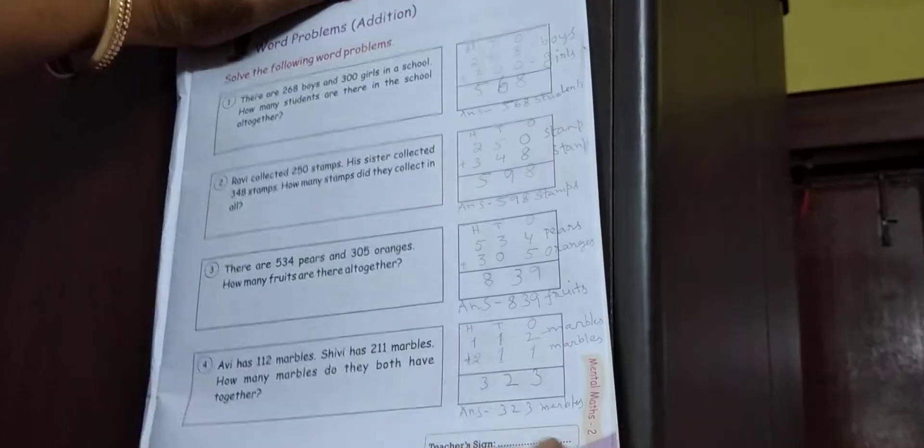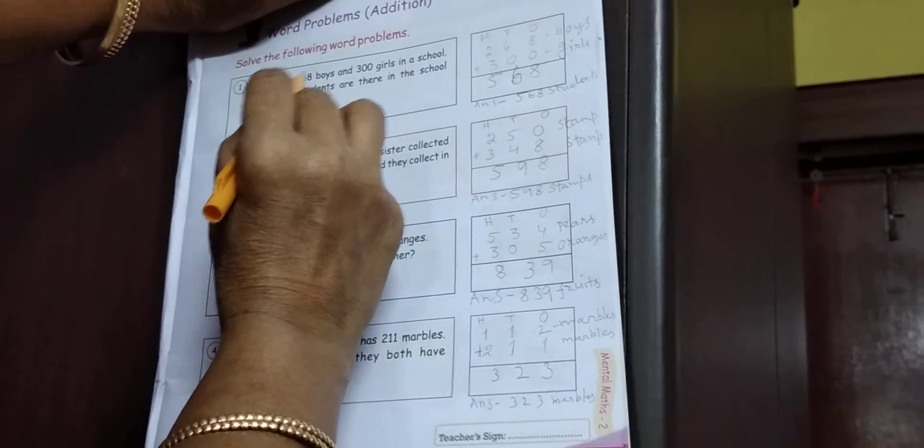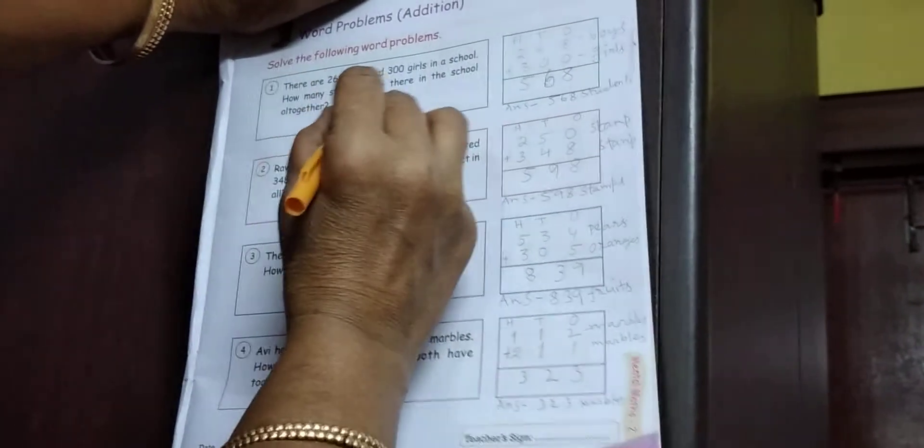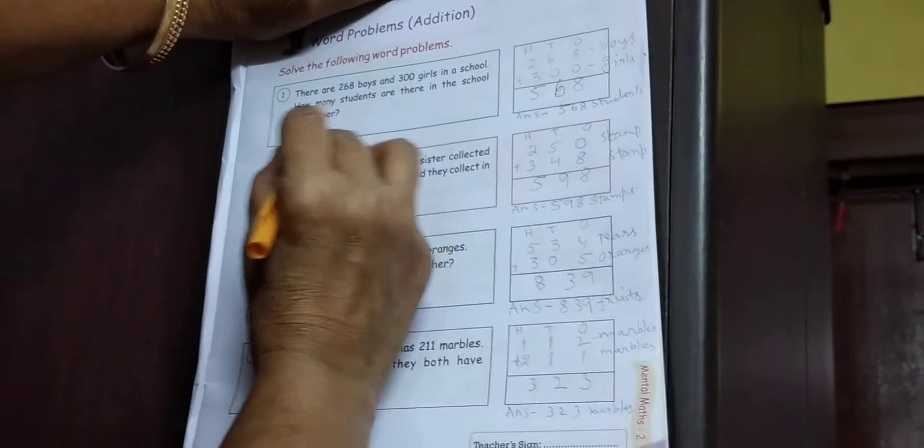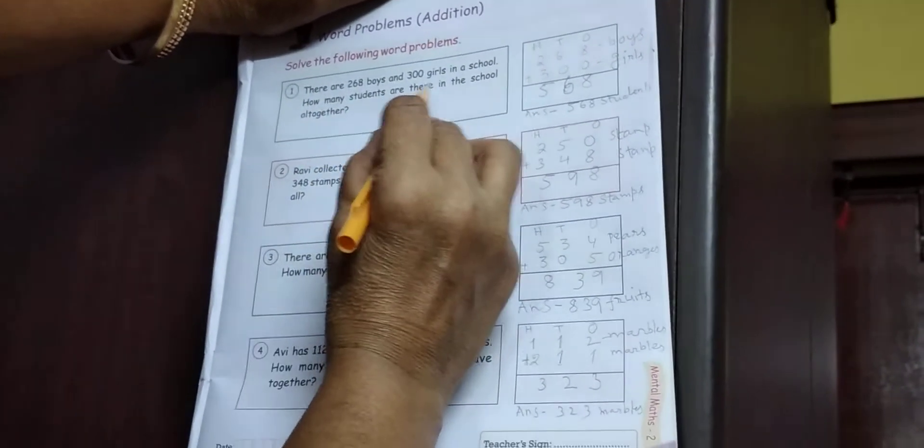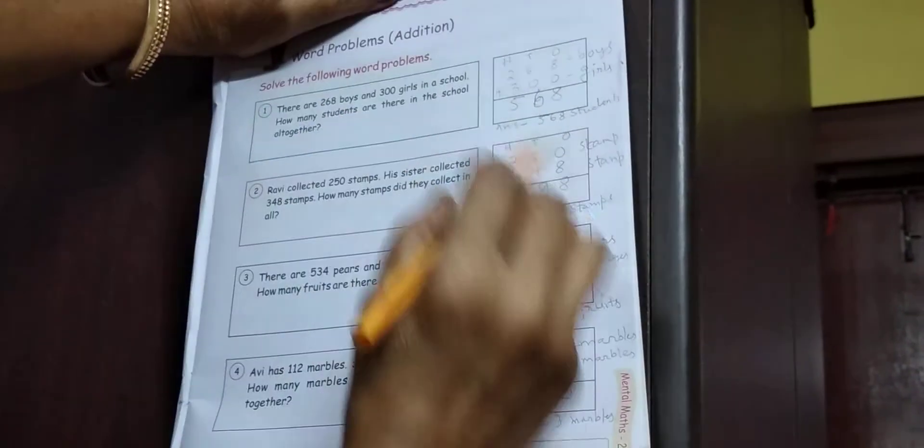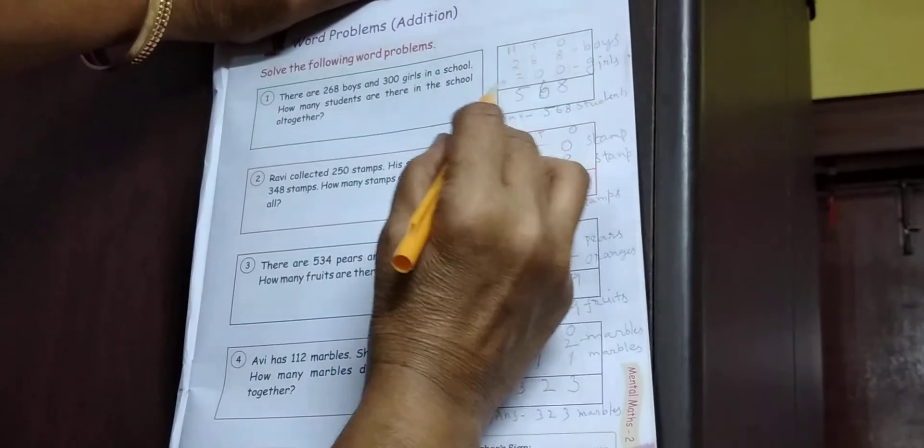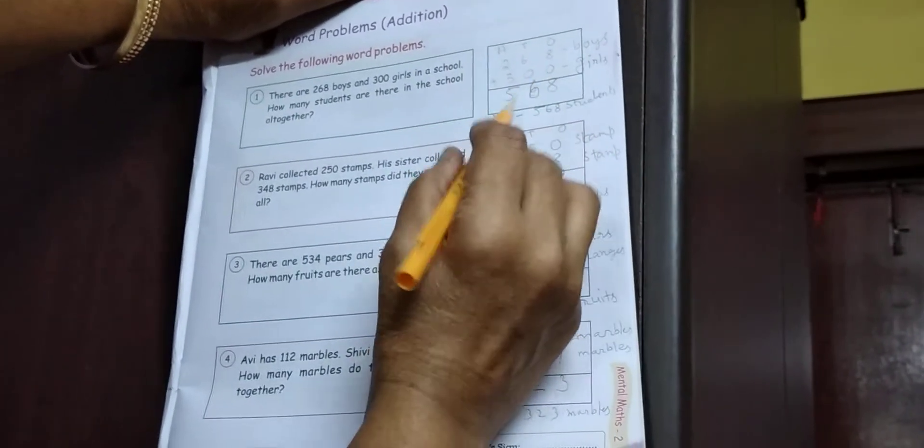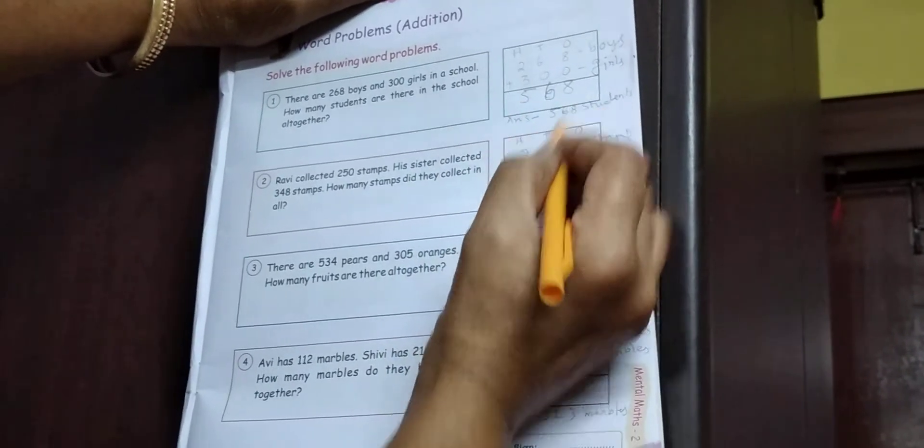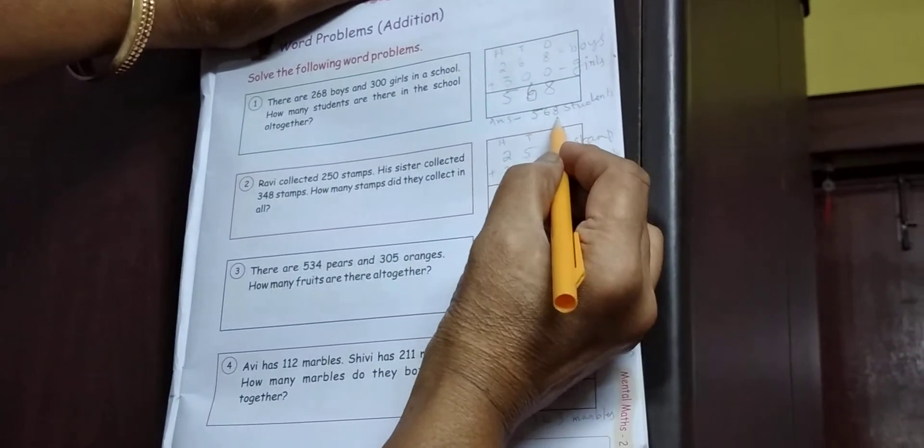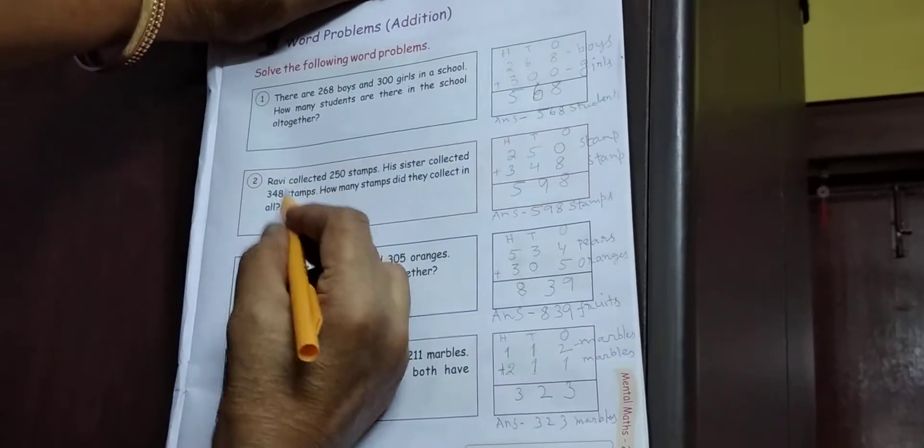Next, Repetition. There are 268 boys and 300 girls in a school. How many students are there in the school altogether? 268 plus 300. Count karke kya bahar huwa? 568. Answer 568 students.